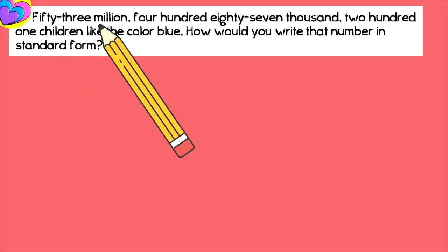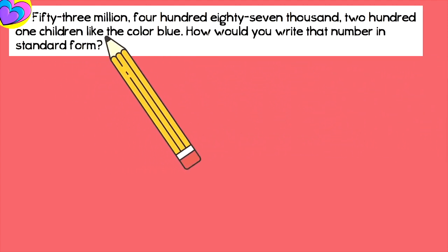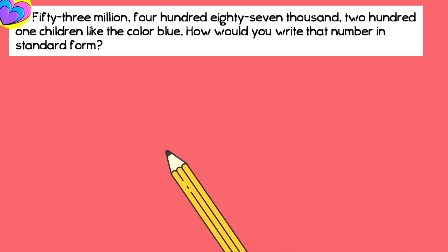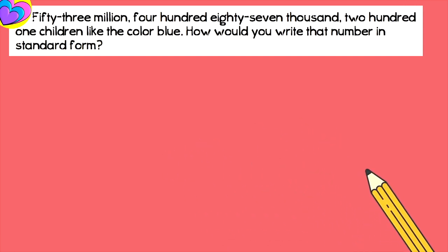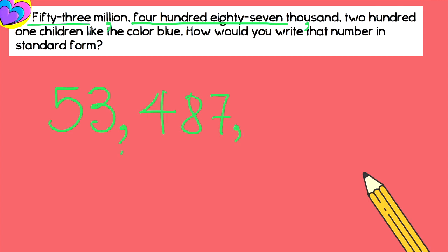Let's read this: 53,487,201 children like the color blue. How would you write that number in standard form? It sounds like a big number, but it's really, really simple. You write 53,000,000 — then 487,000. The first comma represents thousands, this comma is also 1,000 — and then 201. Just like that. That's the answer, kids. Really, that simple.